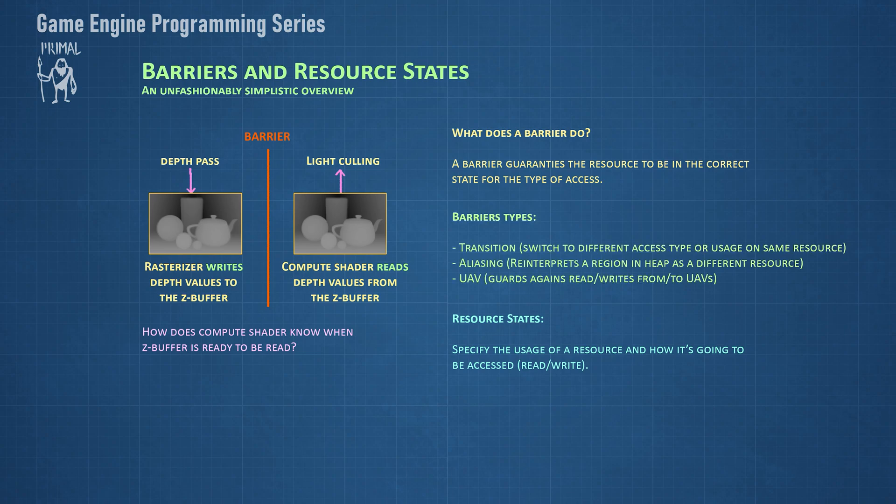There are three types of barriers. The first is a transition barrier, which, as the name indicates, transitions a resource from one state to another.